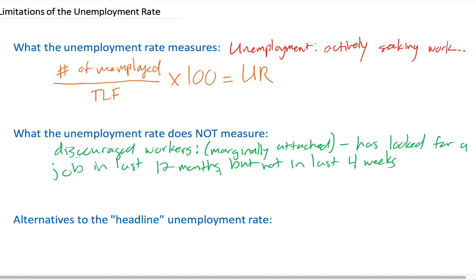A discouraged worker or marginally attached worker is not considered unemployed even though they don't have a job and wish they did. The unemployment rate considers them not even part of the labor force. An individual who's not actively looking for a job and doesn't have a job is simply not in the labor force and therefore is not measured by the unemployment rate.